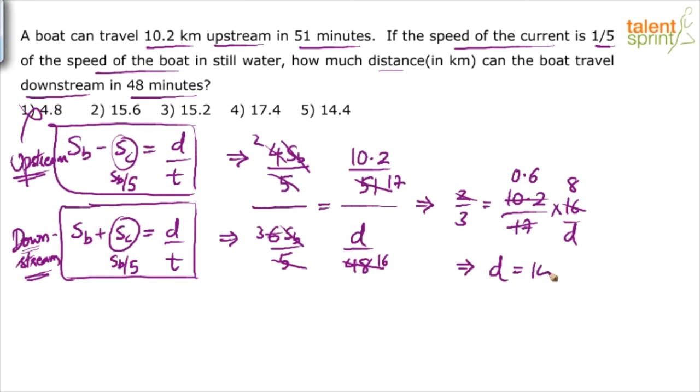How do we know that distance here is in kilometers? Because the distance in the numerator was in kilometers. So obviously, this distance also will be in kilometers. Cut down the number of steps. When you do it yourself, you will get it really quick. 14.4 kilometers, option 5 is the answer.